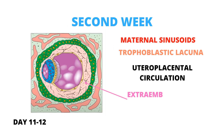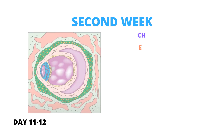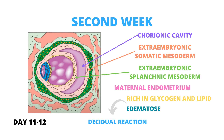At the same time, a new population of cells appears between the inner surface of the cytotrophoblast and the outer surface of the exocelomic cavity, forming a thin, loose connective tissue called extraembryonic mesoderm. This tissue eventually occupies the entire space between the trophoblast on the outside, and the amnion and the exocelomic membrane on the inside. Cavities develop in the extraembryonic mesoderm that eventually converge into one, creating a new space known as the extraembryonic cavity or chorionic cavity.